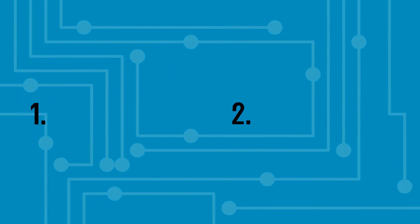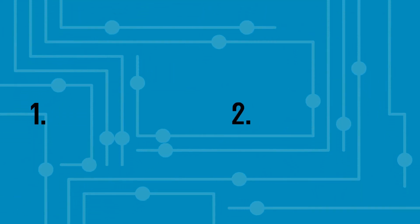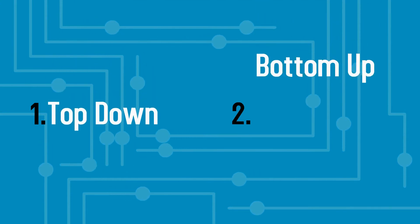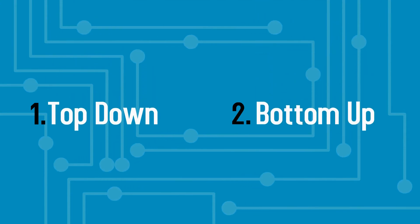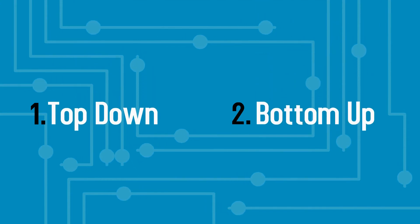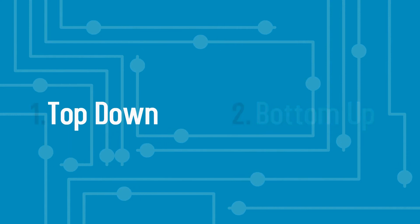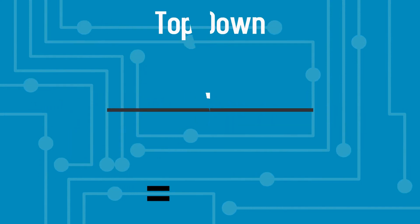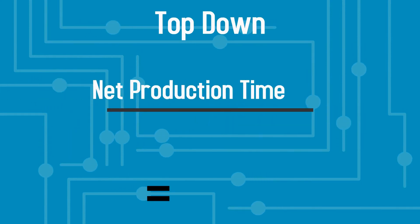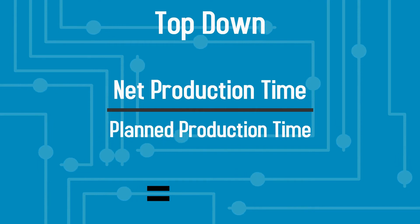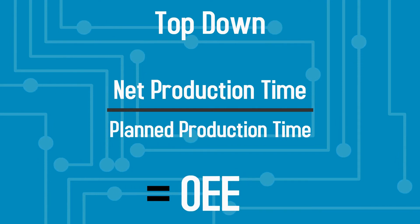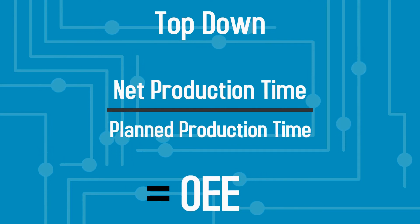There are two additional methods for calculating OEE: the top-down method and the bottom-up method. Let's first begin by examining the top-down method. OEE can be calculated using the top-down method by dividing net production time by planned production time.